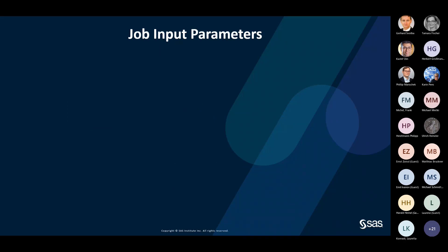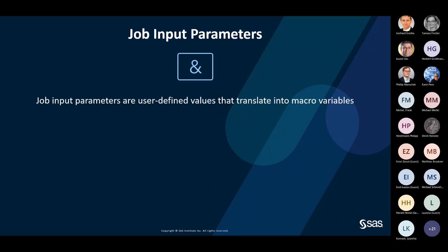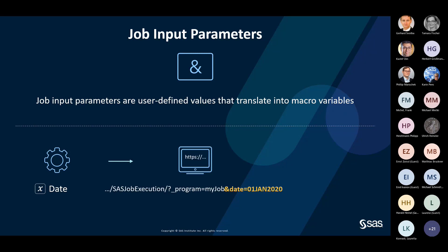They can do that using job input parameters. Job input parameters are user-defined values that translate into macro variables. For example, if we have a job input parameter called 'date' and a user goes to the job execution URL and runs a program named 'my_job', they can change the date parameter — for instance, setting the date parameter to January 1st, 2020 — and this is how the data will be modified.